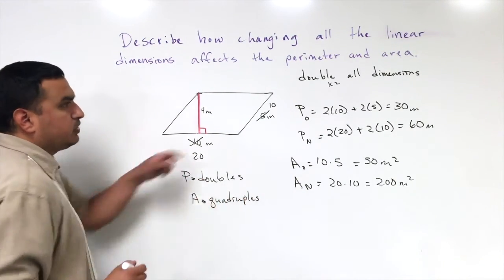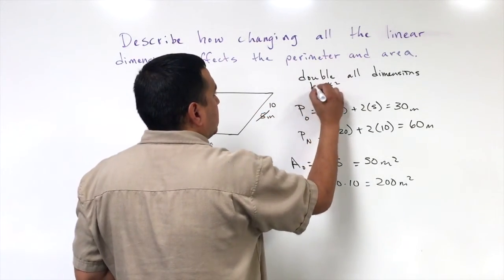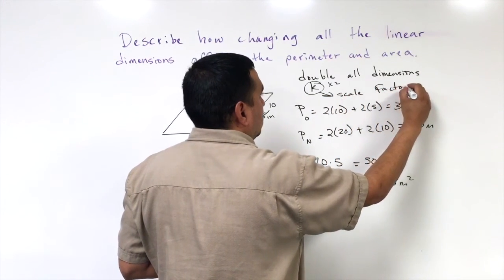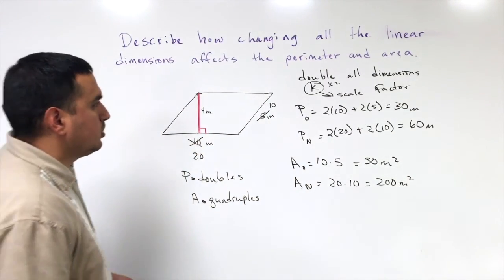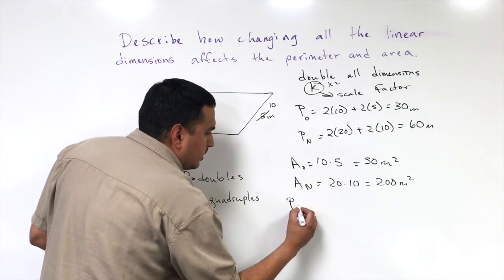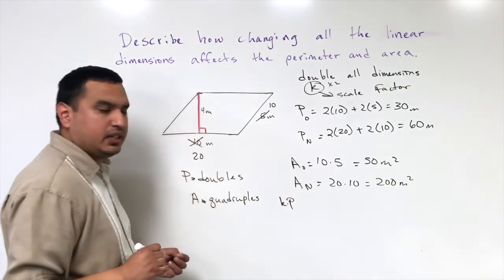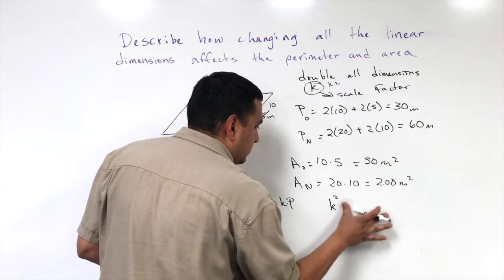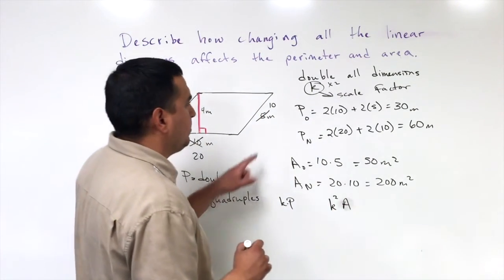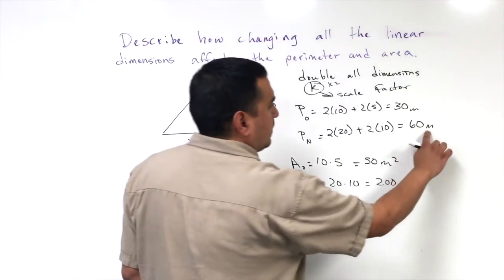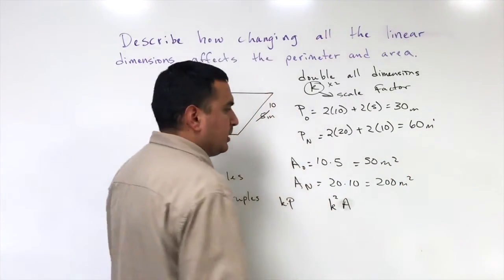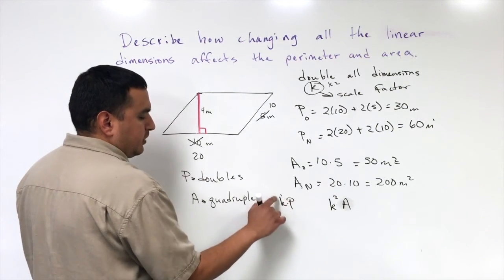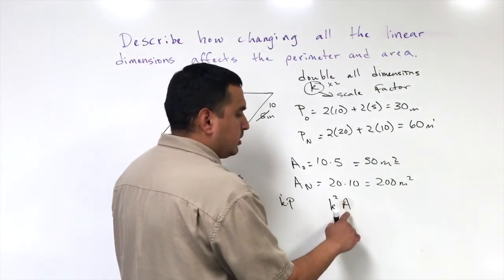This times-2 factor is called K, which is our scale factor. When I apply a dimensional change by scale factor K, my perimeter gets multiplied by K, and my area gets multiplied by K squared. Think of it in terms of exponents — perimeter is a one-dimensional measurement, so I multiply by K to the first power; area is two-dimensional, so I multiply by K squared.